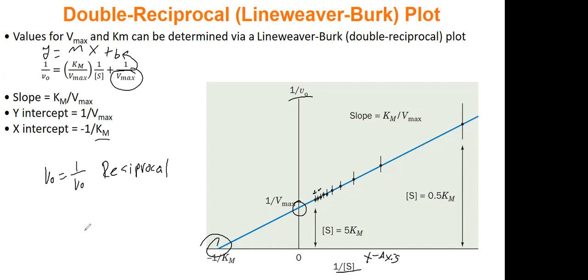So let's say that when you did this on a Lineweaver-Burk, the Y intercept would be 0.25. So that would be one over Vmax equals one over four, because one over four is 0.25. So Vmax is four. So to solve this, when you get your Y intercept, you just do one over whatever you got, and that will give you your Vmax.